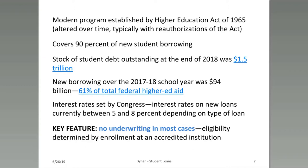The Federal Student Loan Program was established by the Higher Education Act of 1965. It covers about 90% of new student borrowing. The stock of student debt outstanding at the end of 2018 was $1.5 trillion. New borrowing over the 2017 to 2018 school year was $94 billion, about 60% of total federal higher education aid, with the remainder going toward grants.